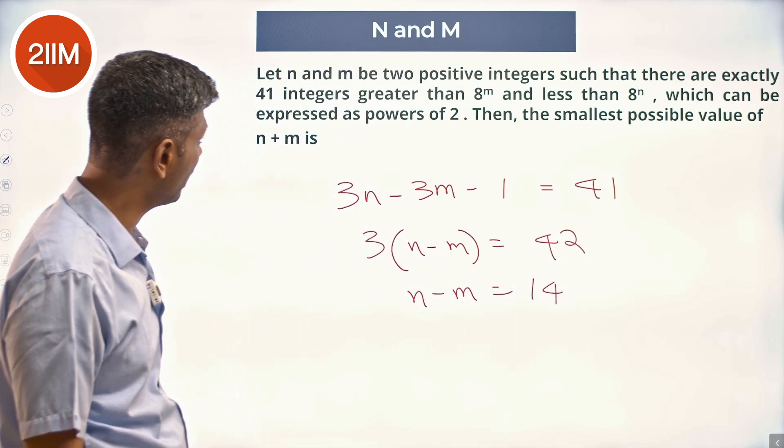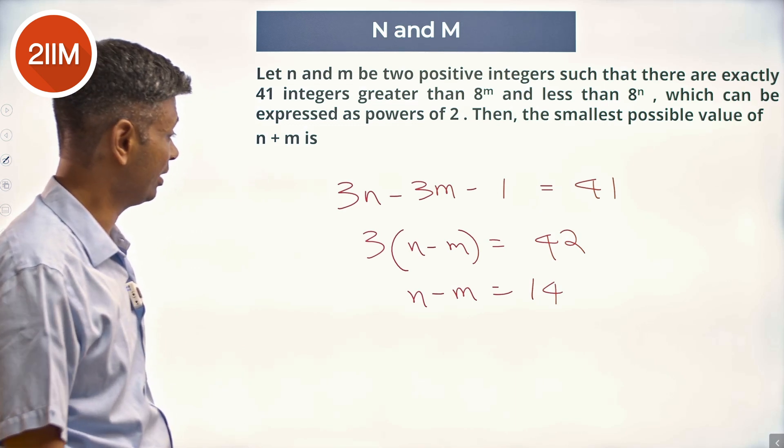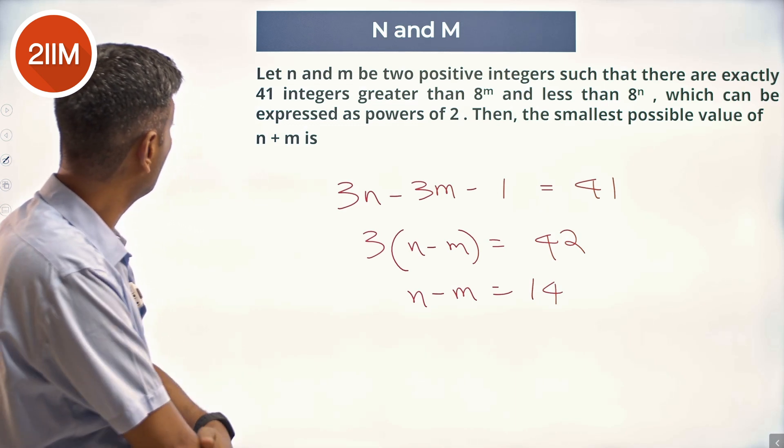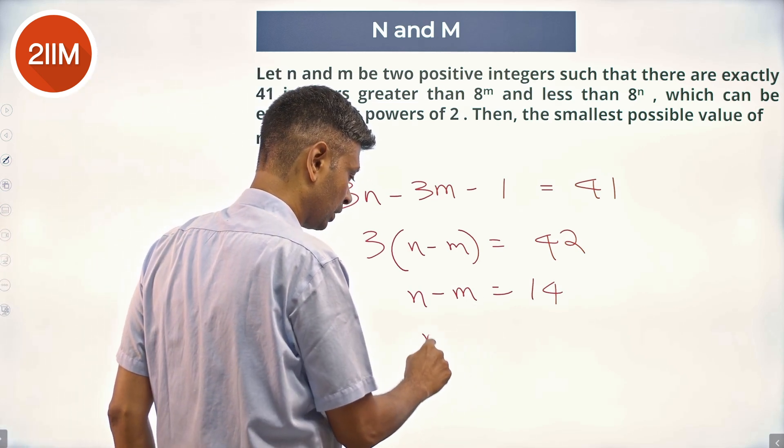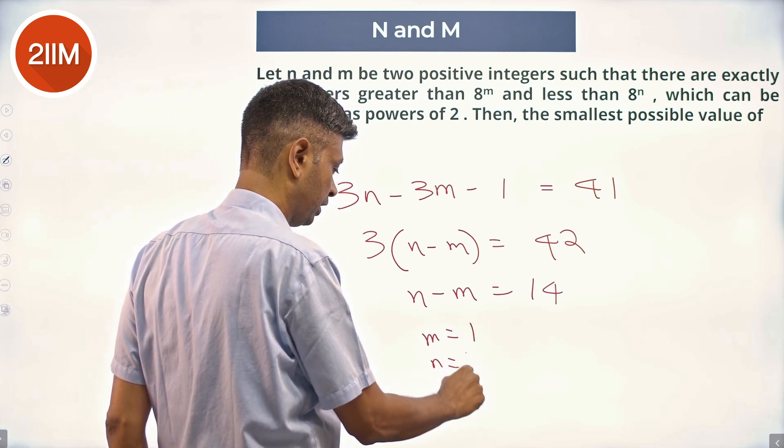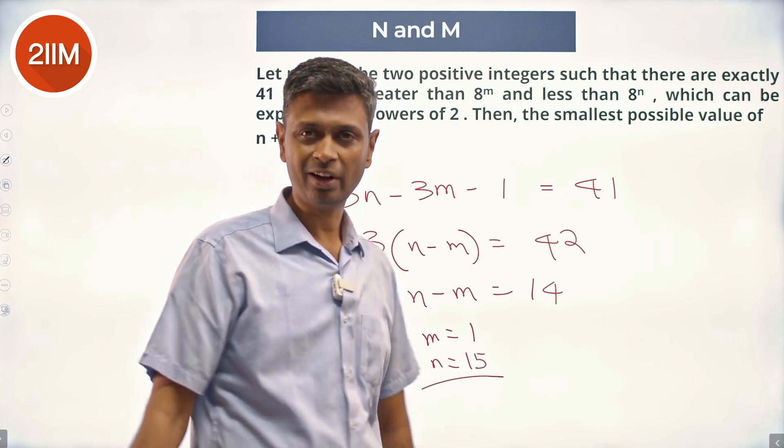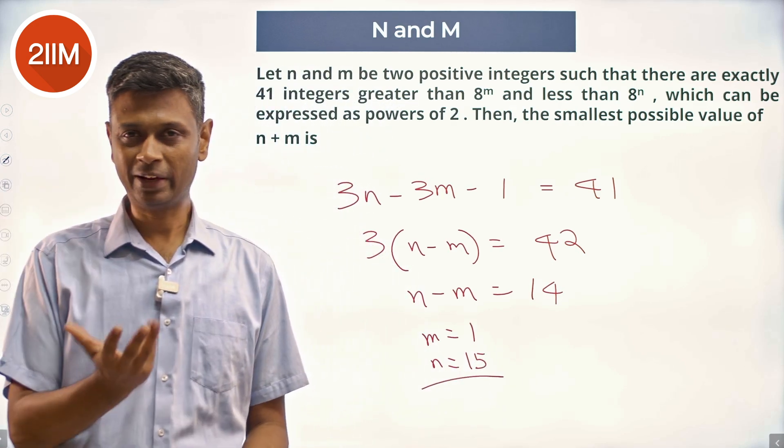What are the smallest values of m plus n? n minus m is 14. All we need - m and n be positive integers, so m could be 1. m is 1, in which case n is 15. 1 plus 15 is 16. Done. Once we find the difference, plugging it in is far simpler.